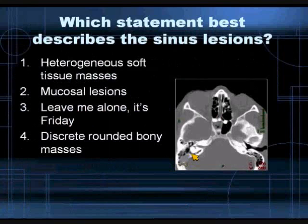Which statement best describes the sinus lesions? Are they heterogeneous soft tissue masses? Mucosal lesions? Bony lesions? Or discrete, rounded, bony masses? Please enter your choice.